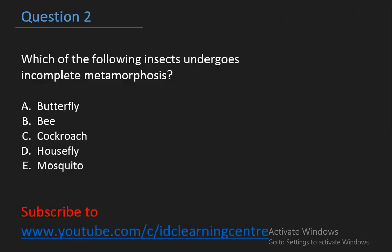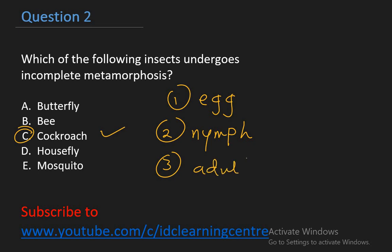Let's take the next question. Question two says, which of the following insects undergoes incomplete metamorphosis? A. Butterfly. B. Bee. C. Cockroach. D. Housefly. E. Mosquito. The right answer is cockroach. Cockroaches undergoes incomplete metamorphosis that consist of three stages. We have stage one, which is the egg. Stage two is the nymph, or the immature stage. And stage three is the adults.